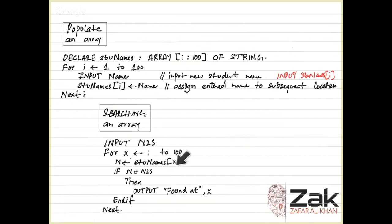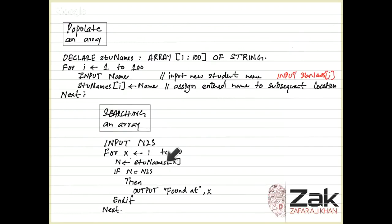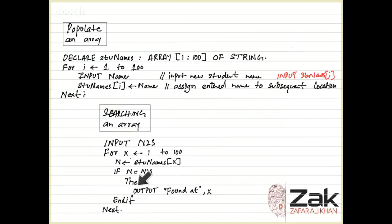For searching: INPUT NameToSearch. FOR x = 1 TO 100, assign the value of that location to n, and then check IF n = NameToSearch THEN OUTPUT 'Found at location', x. This is the same in essence as searching a serial file.